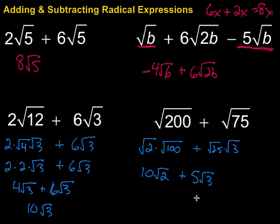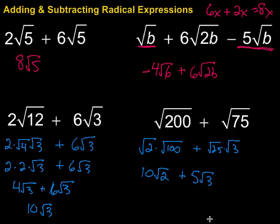When adding and subtracting radical expressions, the key is it works very similarly to combining variables like 6x plus 2x, except now we're working with square roots — the square root has to be the same. Sometimes we might have to do a little work to get there, like simplifying the square root of 12 to get the square root of 3 in both terms. If simplification is possible, we need to make sure we do that. Hope this video is helpful — keep working hard on your math, you can do it!